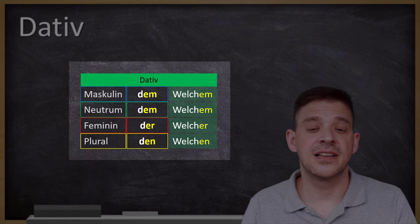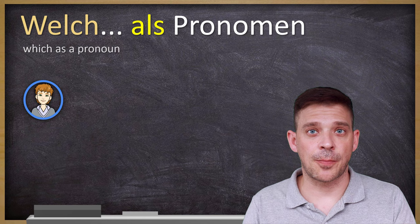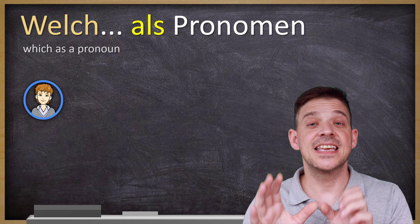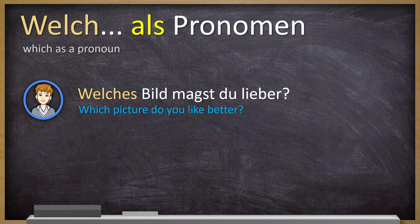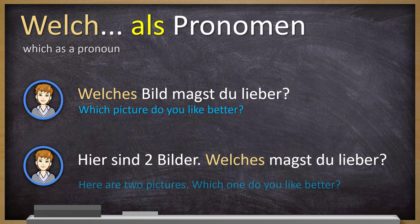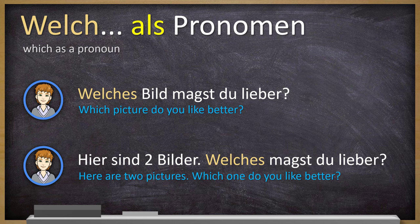Bonus tip number one: welch can also be used as a proper pronoun, meaning it replaces a noun entirely. For example, instead of Welches Bild gefällt dir besser? you can say Welches? — just Welches, without repeating Bild. Here are two pictures — which one do you like better? The noun Bild is dropped and welches acts as the standalone pronoun.